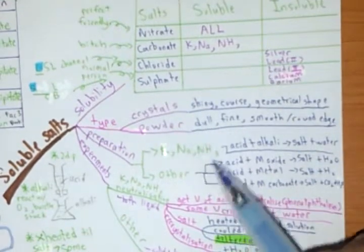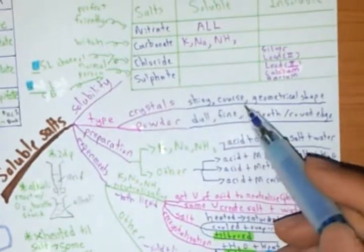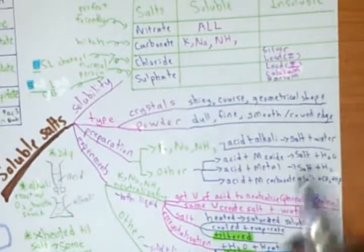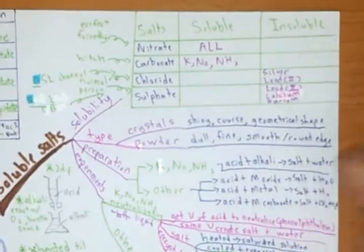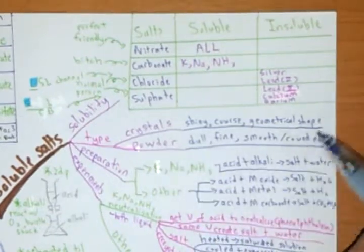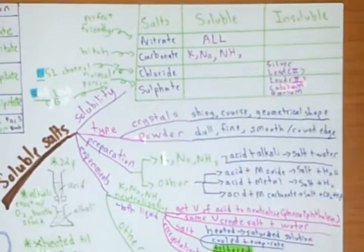Let's talk about the next thing which is just some simple stuff, crystal and powder. For crystal it is basically things that are very shiny, very coarse, geometrical shape. Just go to the supermarket and check out crystal sugar and then powder sugar and you know the difference. Powder is like that, it will be fine, smooth and round edges.